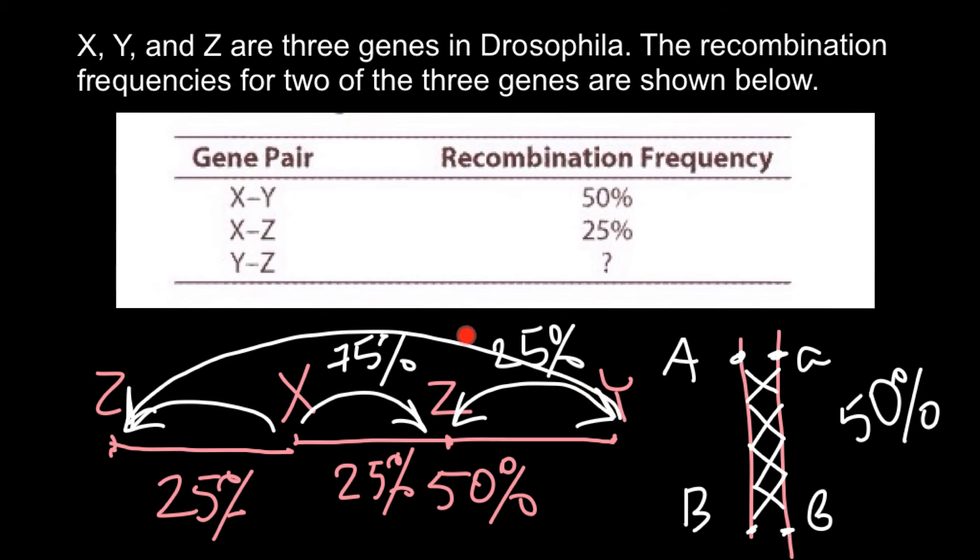And we cannot get 75% probability of crossing over between two genes. So we have to exclude this variant. And here would be a position of the gene Z. And we can say that between gene Z and Y,